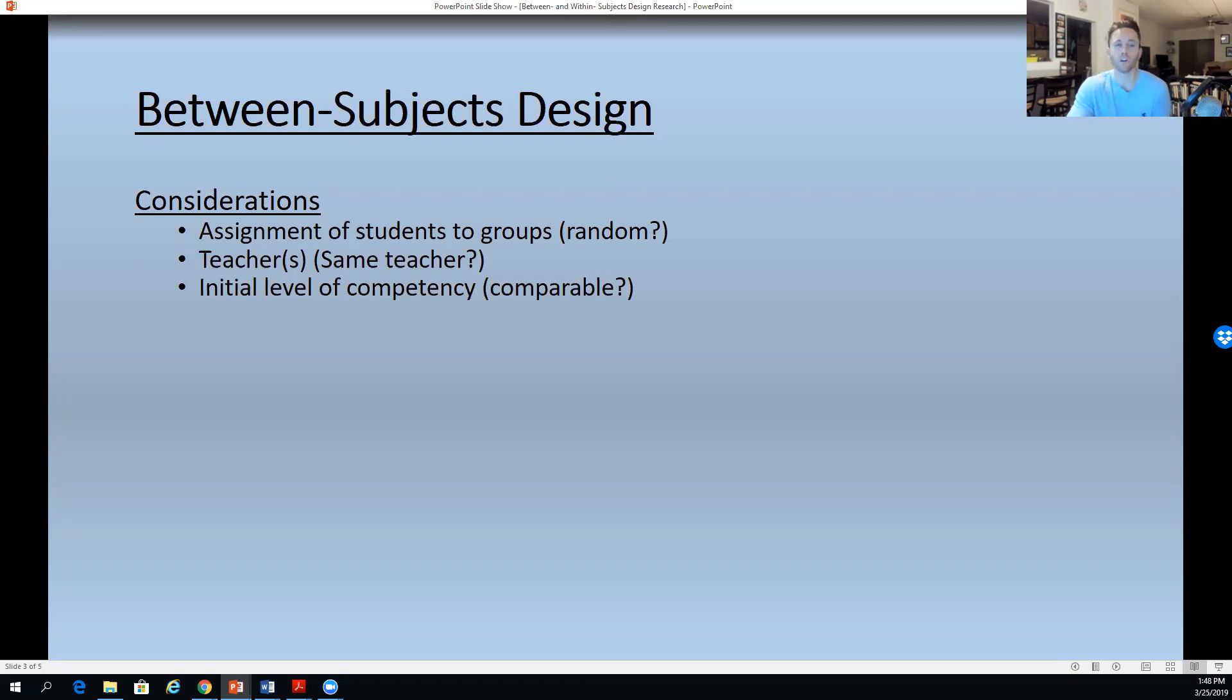The third point is the initial level of competency. Are students who are in these groups starting out at the same level? We can do a pretest design, for example. We can see if there's statistically significant difference between those two groups. If there isn't, then we can go ahead with the study and say that they're comparable. And then finally, we're going to think about replacement time. If one group is a control and another is an experimental group, and the experimental gets a particular treatment that the control doesn't, what does the control get to do during that time?